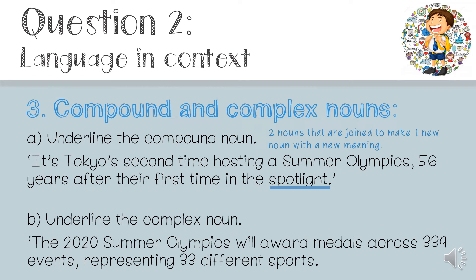Number B — underline the complex noun. A complex noun is a group of words that work together as a noun, so we see them as one thing — a noun phrase. The sentence is: 'The 2020 Summer Olympics will award medals across 339 events, representing 33 different sports.' We're looking for a group of words that work together as one. In this case it is 'the 2020 Summer Olympics' — not just 'the Olympics' or 'the Summer Olympics', but 'the 2020 Summer Olympics'.